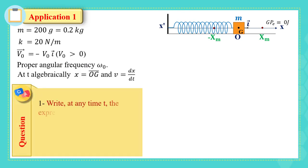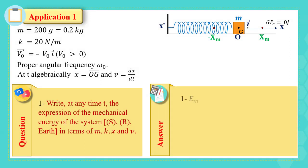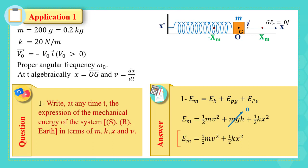Part one: write at any time t the expression of the mechanical energy of the system S-R-Earth in terms of m, k, x, and v. The mechanical energy is the sum of kinetic energy, gravitational potential energy, and elastic potential energy. But since the gravitational potential energy reference level passes through the center of mass of solid S, the gravitational potential energy is zero. Thus the mechanical energy is simply ½mv² + ½kx².